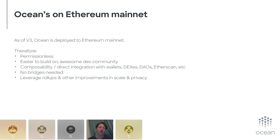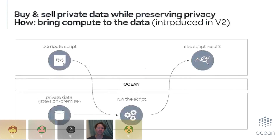To recap what compute-to-data is: at the top level is the data scientist with their compute script who wants to see results. The middle layer is Ocean playing a handshaking role. At the bottom is the data provider — their data stays on-premise. The compute script supplied by the data scientist gets run on that data, and the results show up for the data scientist. This works for AI model building but also simpler things like computing a median or average for business intelligence applications.